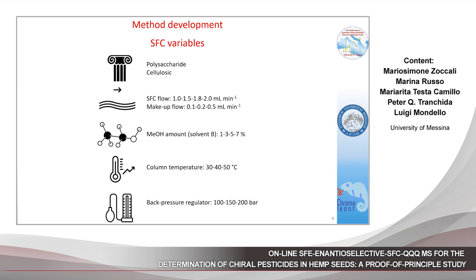In the first instance, the SFC parameters were optimized. Two different stationary phases were employed, along with various CO2-to-methanol ratios, different flow rates, back pressure values, make-up flow rates, and oven temperature. Once the best SFC conditions were defined, standard solutions of R-benalaxil, S-dimethenamide, and R-metalaxil were analyzed to assign the identity of each enantiomer. For both benalaxil and metalaxil, the S-enantiomer is the first to elute. Conversely, the R-form of dimethenamide is the first eluting enantiomer.